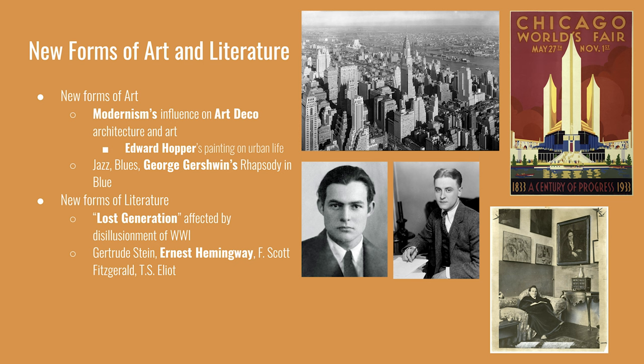A new literature movement developed partially in response to the end of World War I. The Lost Generation was a group of writers who came of age during this time. The term was coined by Gertrude Stein, who was herself part of the Lost Generation. These writers experienced disillusionment due to the sacrifice and devastation of the war — optimism and hopes of progress were lost. Instead, they wrote about the uncertainties of the modern world. Lost Generation writers often did most of their work while living abroad; Paris was one popular melting pot for them.